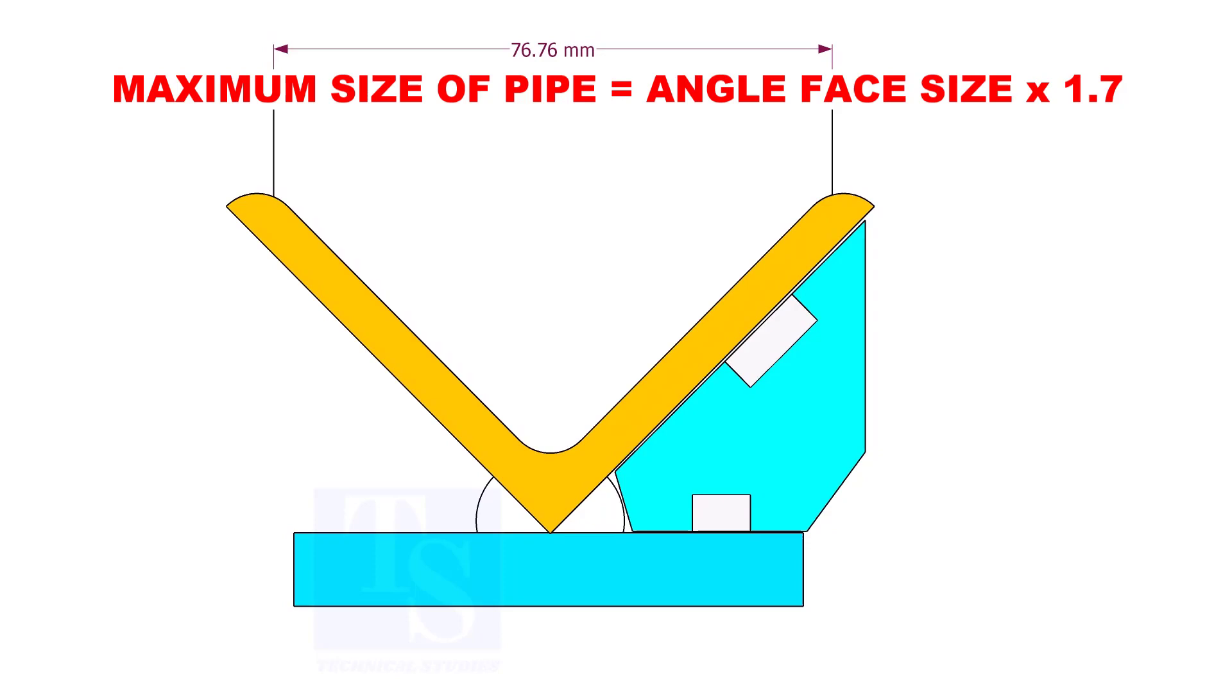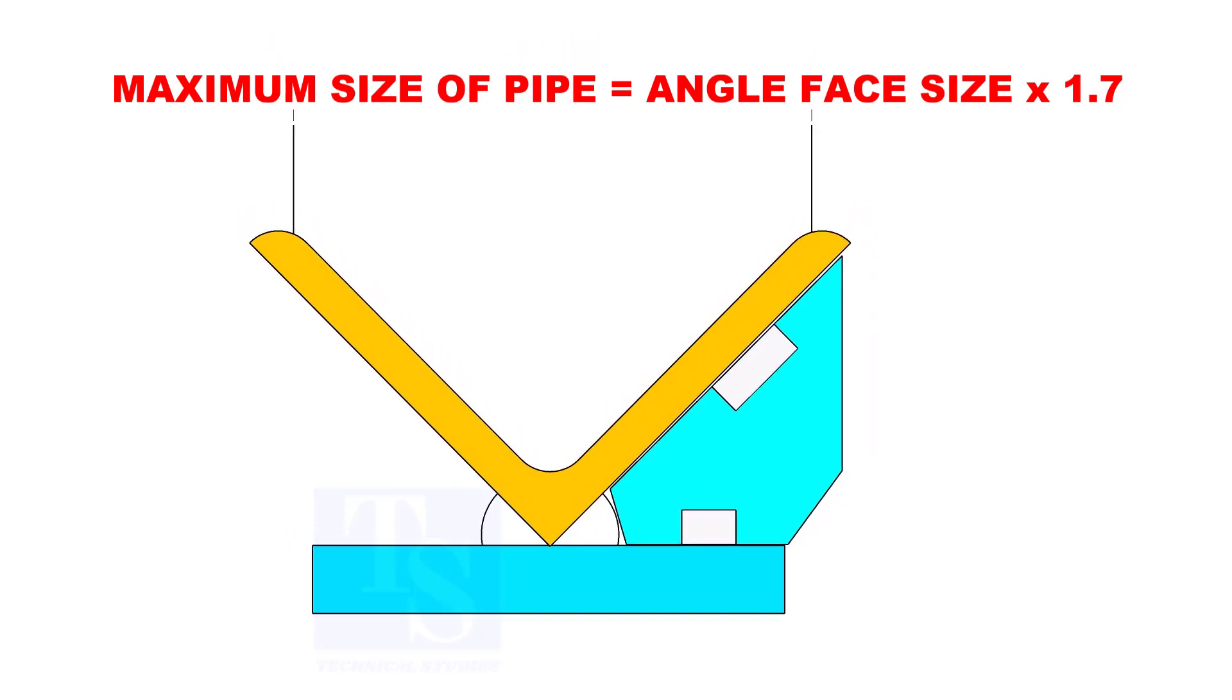The maximum size of the pipe shall be determined by multiplying the width of the angle face by 1.7.